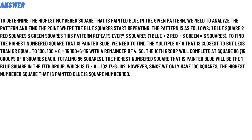To find the highest-numbered square that is painted blue, we need to find the multiples of six that are closest to and less than or equal to one hundred. The formula is given below, so that gives us the answer to the question.